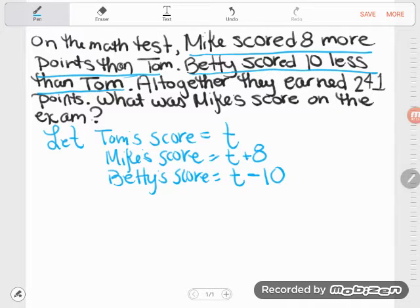Now careful, don't write 10 minus T. That's not the same thing. That would be taking Tom's score away from 10. But Betty has 10 less than Tom. So we've got to start with Tom and take away 10.